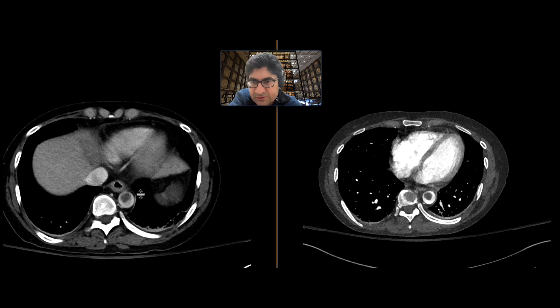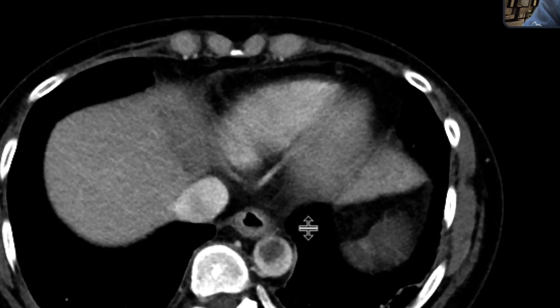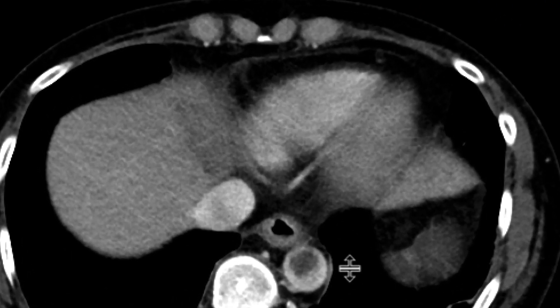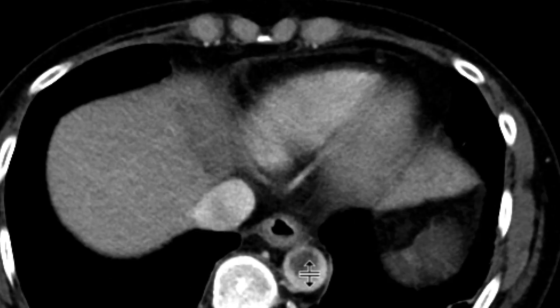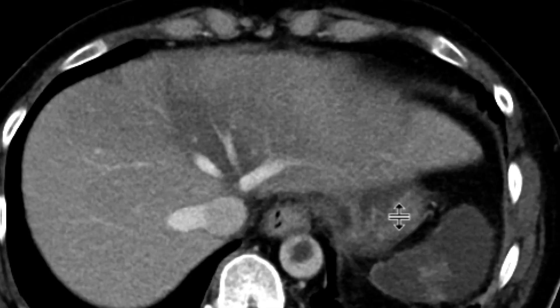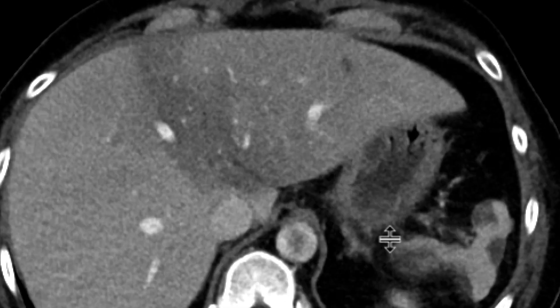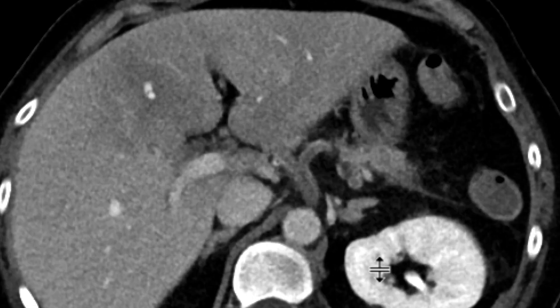Starting with the portal venous phase, as we scroll down we can already see at the lung bases, and right here in the distal descending aorta, this filling defect — this big thrombus that's almost floating in that aorta.